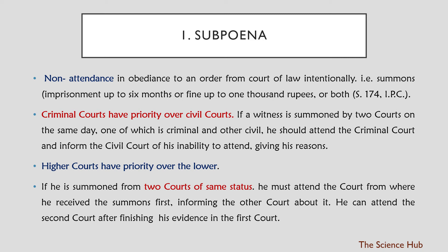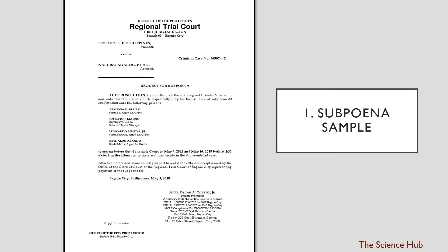Criminal courts have priority over civil courts. If a witness is summoned by two courts on the same day — one criminal, one civil — he should attend the criminal court and inform the civil court of his inability to attend. Higher courts have priority over lower courts. If summoned by two courts of the same status, he must attend the court from which he received the summons first, inform the other, and attend the second court after finishing his evidence in the first. Here you can see a sample of a subpoena.